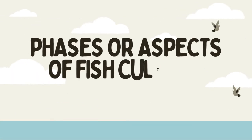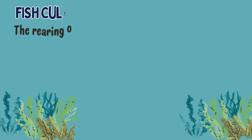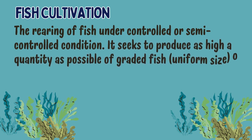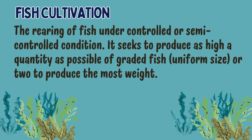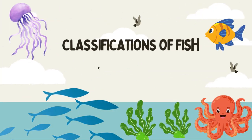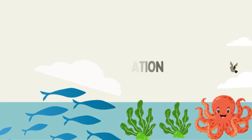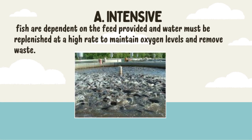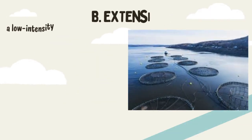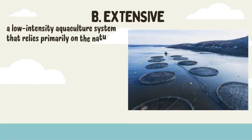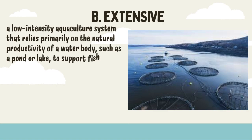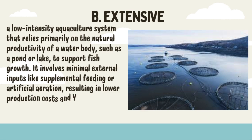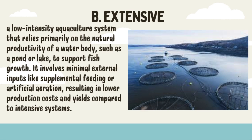Phases or Aspects of Fish Culture. Fish Cultivation: the rearing of fish under controlled or semi-controlled conditions. It seeks to produce as high a quantity as possible of graded fish of uniform size, or to produce the most weight. Classifications of Fish Cultivation: A. Intensive — fish are dependent on the feed provided, and water must be replenished at a high rate to maintain oxygen levels and remove waste. B. Extensive — a low-intensity aquaculture system that relies primarily on the natural productivity of a water body, such as a pond or lake, to support fish growth. It involves minimal external inputs like supplemental feeding or artificial aeration, resulting in lower production costs and yields compared to intensive systems.